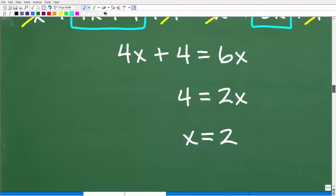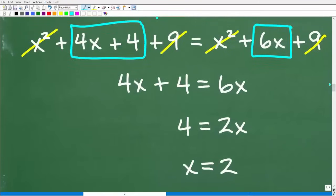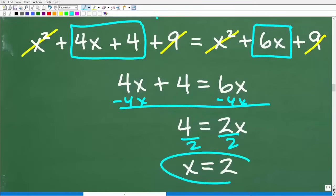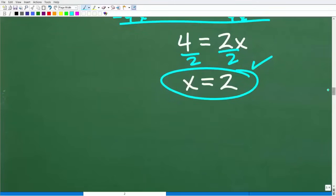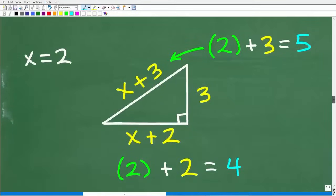That just leaves me with this nice, lovely, linear equation. 4X plus 4 is equal to 6X. I can simply subtract 4X from both sides of the equation. And we're going to end up with 4 is equal to 2X. To solve for X, all I have to do is divide both sides of the equation by 2. So X will be equal to 2.